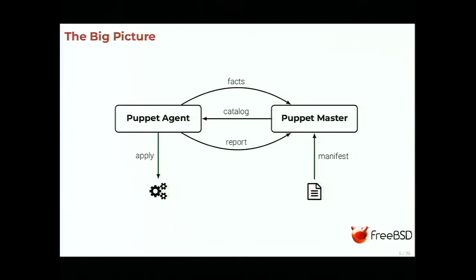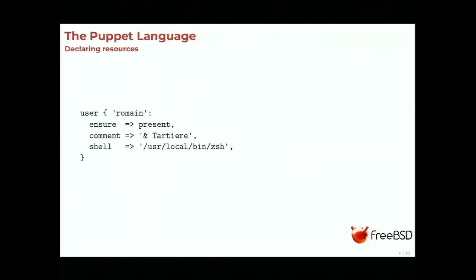The only thing the systems administrator has to manage is the manifest. A manifest is written in the Puppet language and declares resources. Here is a user resource for managing a user account for me, Romain. We ensure this user account is present — that the user exists on the system. We set the GECOS field to my full name and my shell to sh. The user type can manage more parameters; I've set only three. I could have managed my password by putting the hash, and it would be enforced.